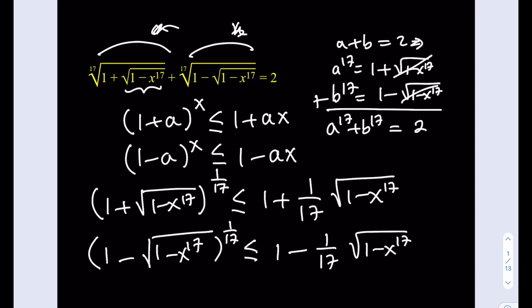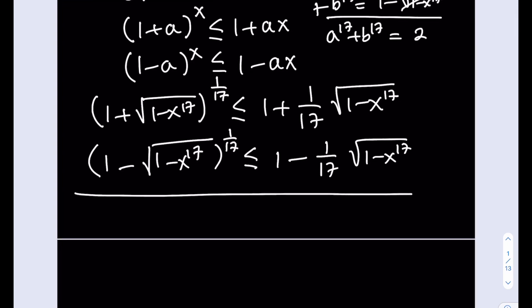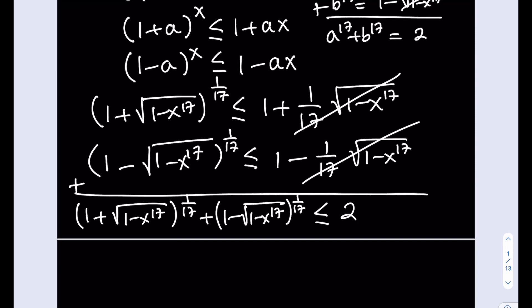So what is nice about this is that our expression is actually equal to the sum of these two, and we know that it's equal to 2, so we're going to add these two inequalities. You know that two inequalities can be added side by side. So from here, we're going to be getting 1 plus the square root of 1 minus x to the 17th power, that to the power 1 over 17, plus the minus version, 1 minus square root of 1 minus x to the power 17, that to the power 1 over 17, is less than or equal to, and something nice that happens here when you add these two, the radical terms cancel out, leaving us with a nice number, which is 2.